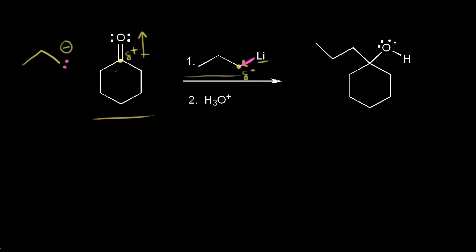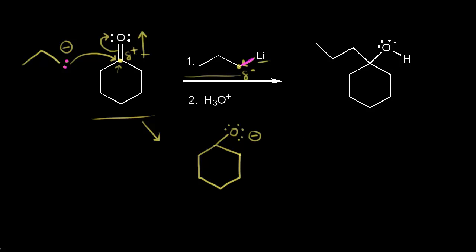Since we have a negatively charged carbon, this carbanion is an excellent nucleophile, and it's going to attack the electrophilic portion we already identified. Opposite charges attract — the negative charge is attracted to the positive charge. In the first step of our mechanism, our nucleophile attacks our electrophile. We can't just show a bond between those two carbons because that would give 10 electrons around this carbon, exceeding an octet. So we take these two electrons and move them off onto our oxygen. We also have an oxygen with three lone pairs of electrons around it, giving it a negative one formal charge. The electrons in blue come off onto our oxygen, giving the oxygen a negative one formal charge.